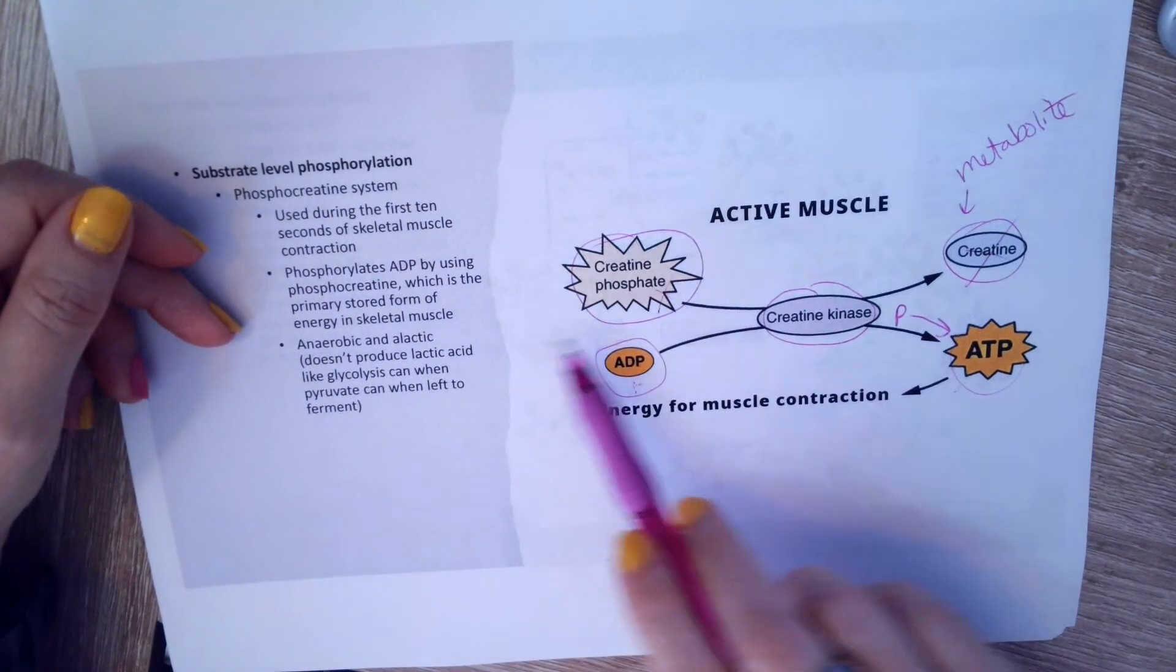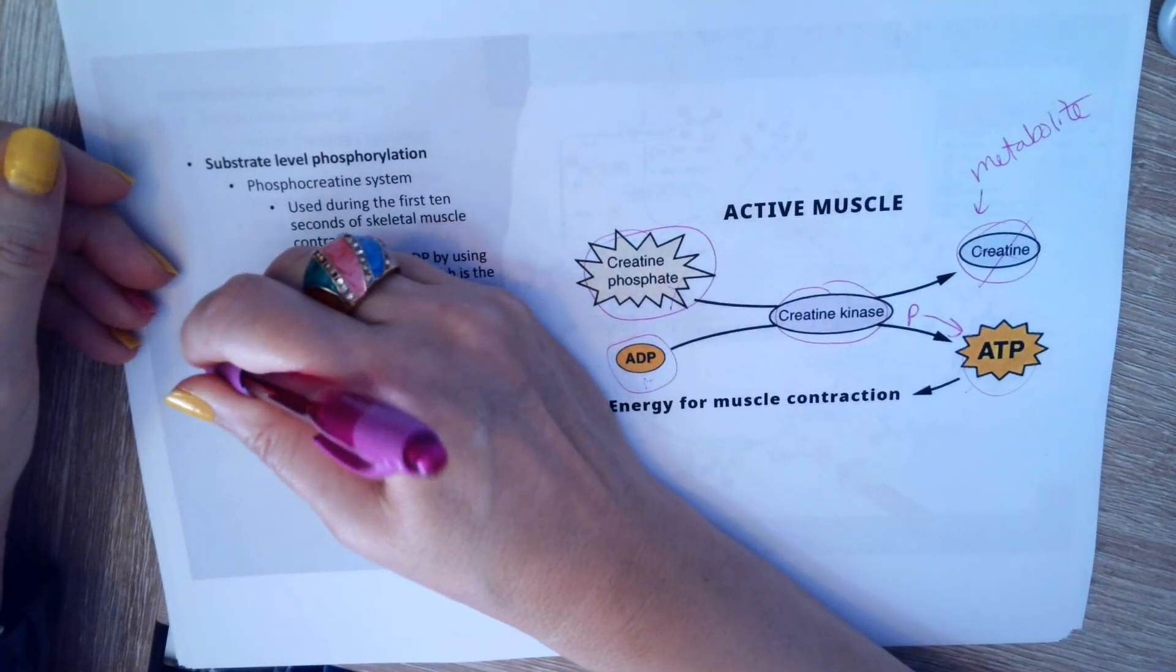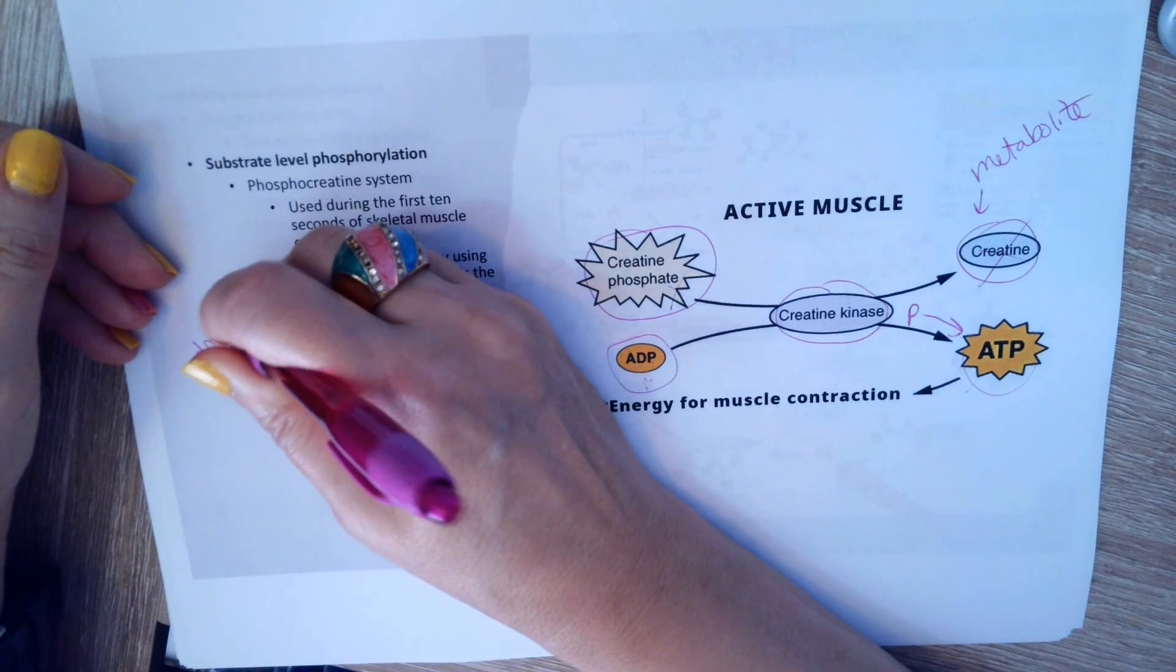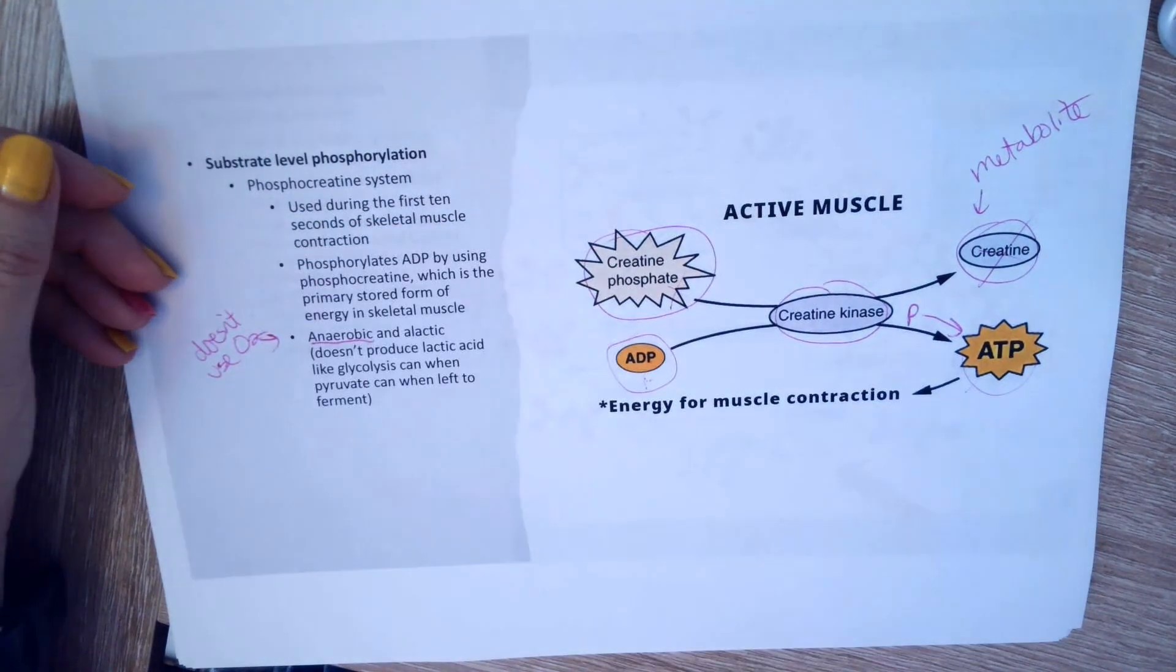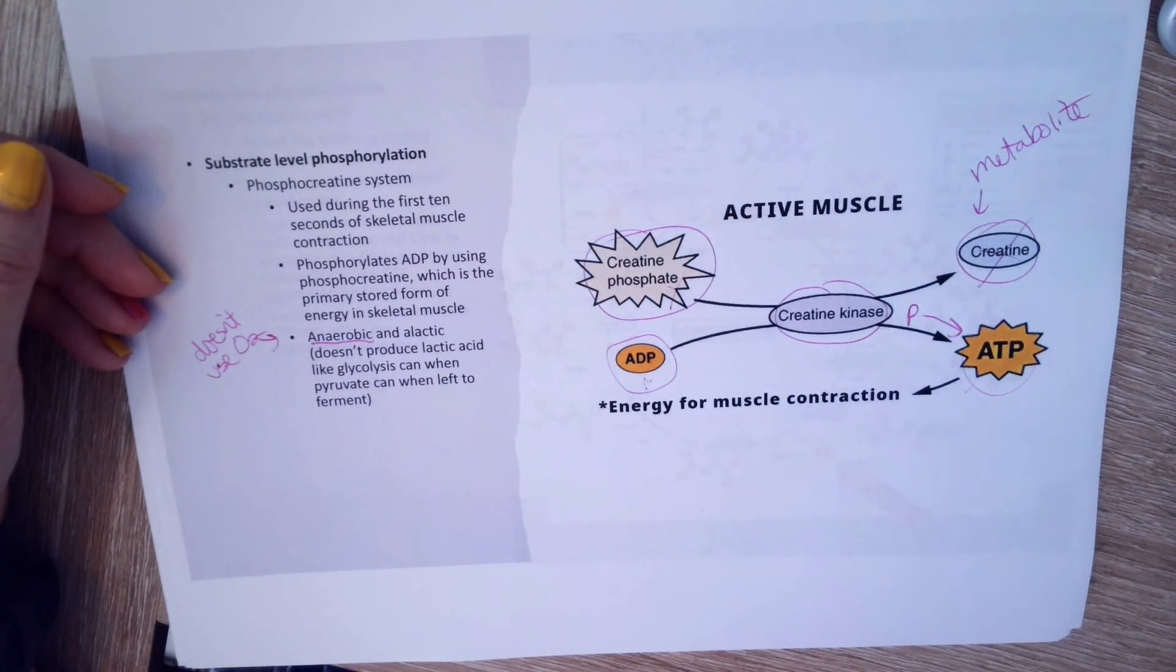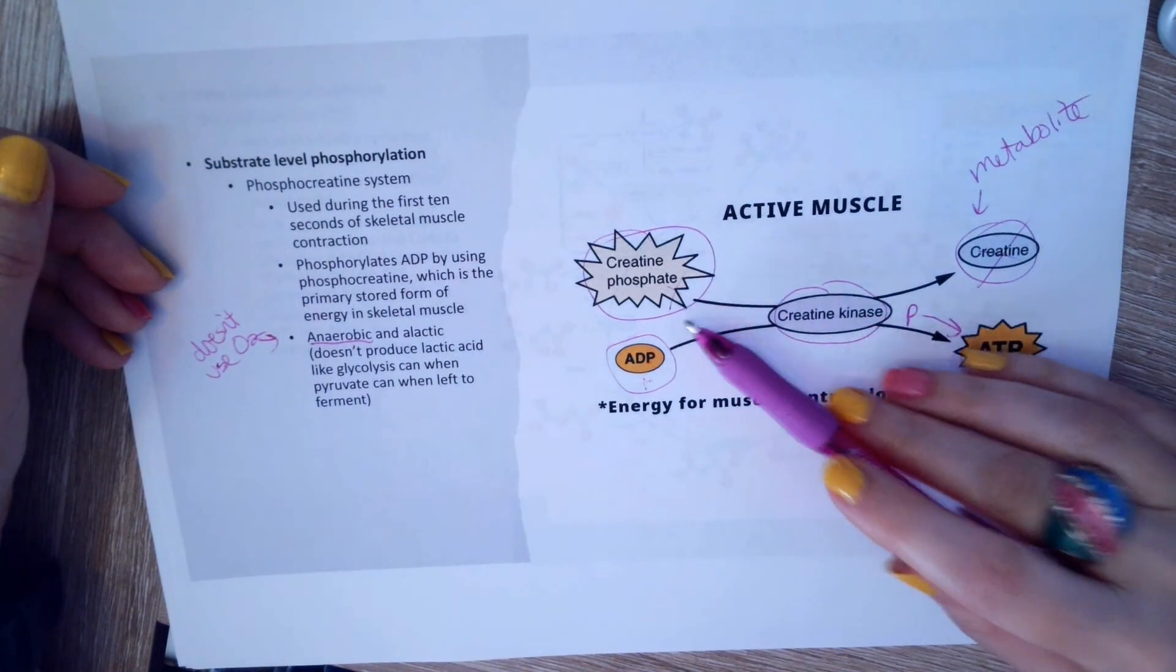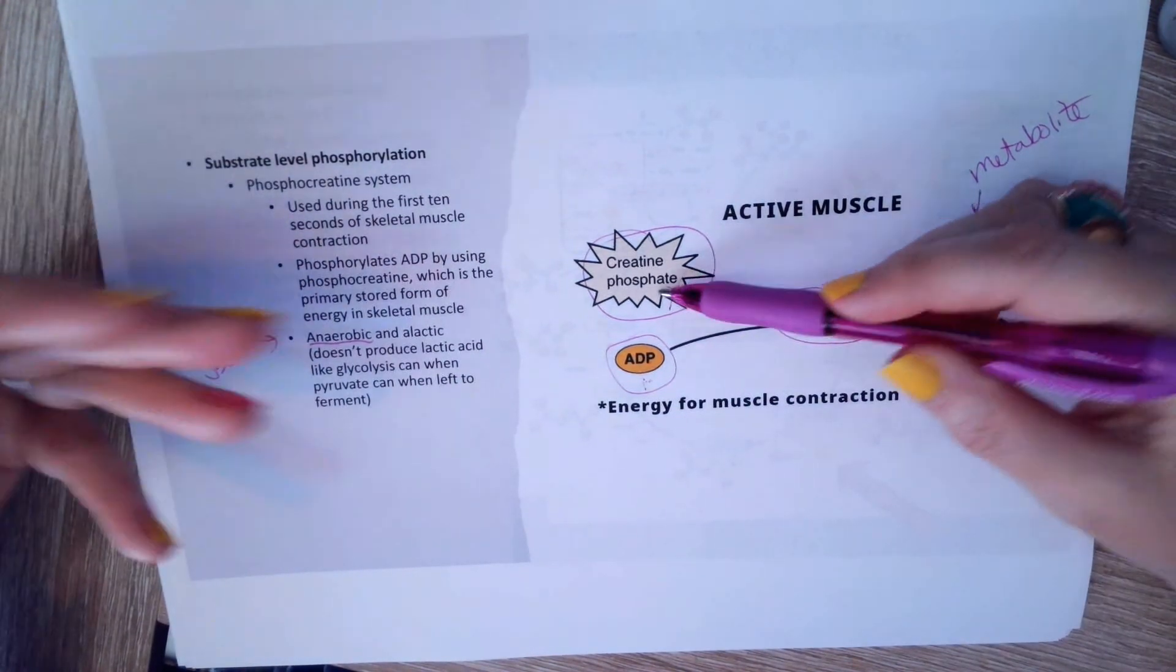Okay, so this whole process here is anaerobic, so doesn't use oxygen. Okay, so that helps when you are using, you run the Krebs cycle so much that you're using oxygen up in a way that you can't keep up with. So you're becoming anaerobic, and that makes it harder to make energy. It makes it harder to make ATP through the Krebs cycle. So this is a nice way you've kind of stored this. You don't need to use oxygen in order to get the energy out of this.